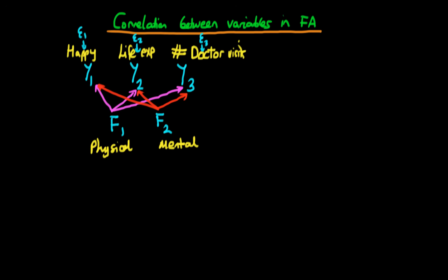The example which we're going to use here is we're trying to explain the variance between how happy an individual feels, their life expectancy, and the number of doctor visits which that individual actually undertakes.